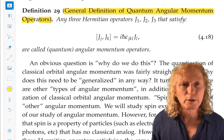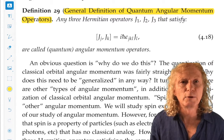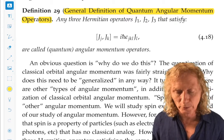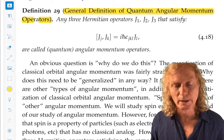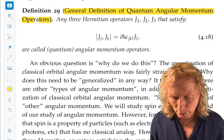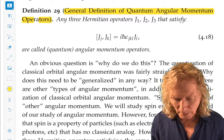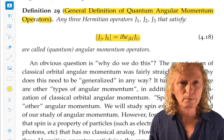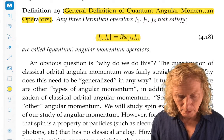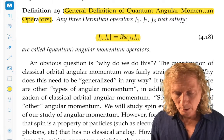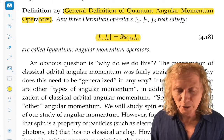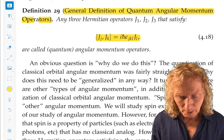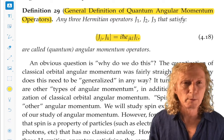And this is just any three self-adjoint or Hermitian operators - J, we're calling them J now, not L - J1, J2, J3, which satisfy these commutation relations. Any three self-adjoint operators or Hermitian operators that satisfy this are called quantum angular momentum operators.